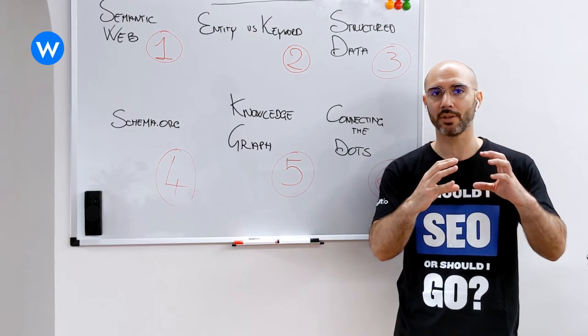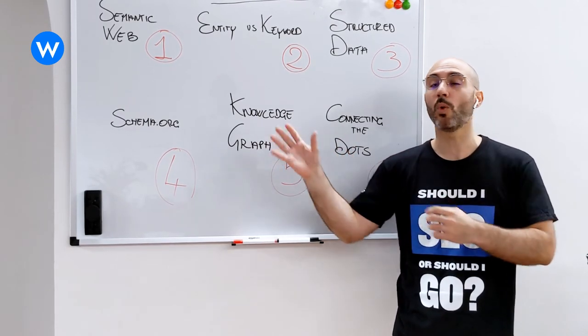I can say Gennaro person works at affiliation, which is a property, WordLift organization, which is another entity type that we find in schema.org.